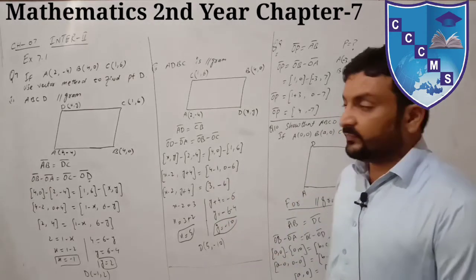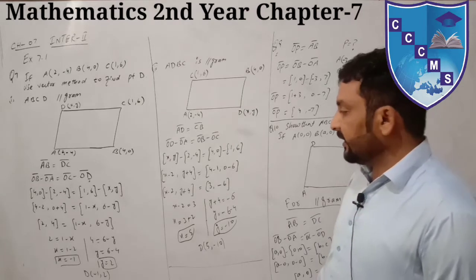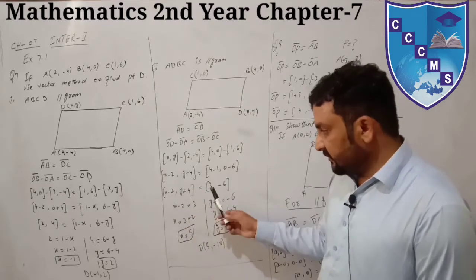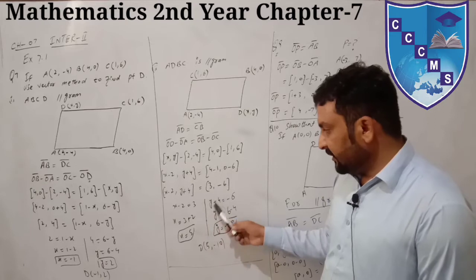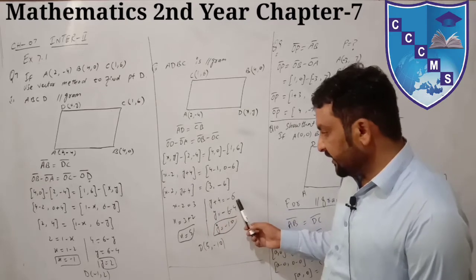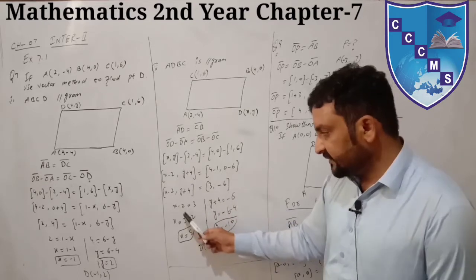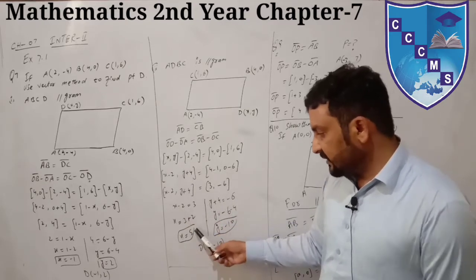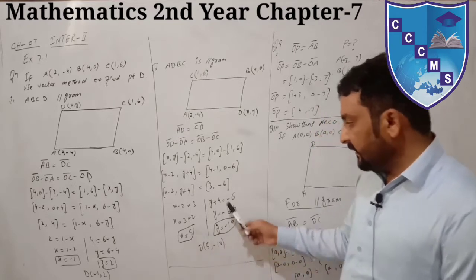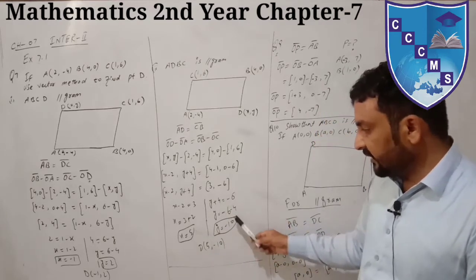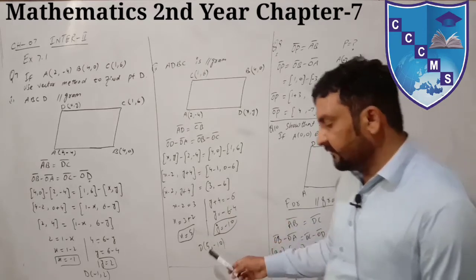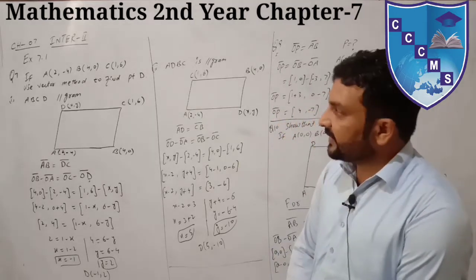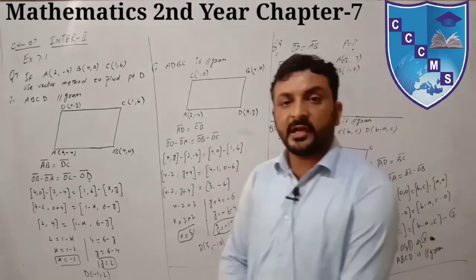The x-coordinate equals x and y-coordinate equals y. So: x minus 2 equals 3, and y plus 4 equals minus 6. From the first equation, bring minus 2 to the other side: x equals 5. From the second equation, bring 4 to the other side as negative: y equals minus 10. So the answer is (5, minus 10).